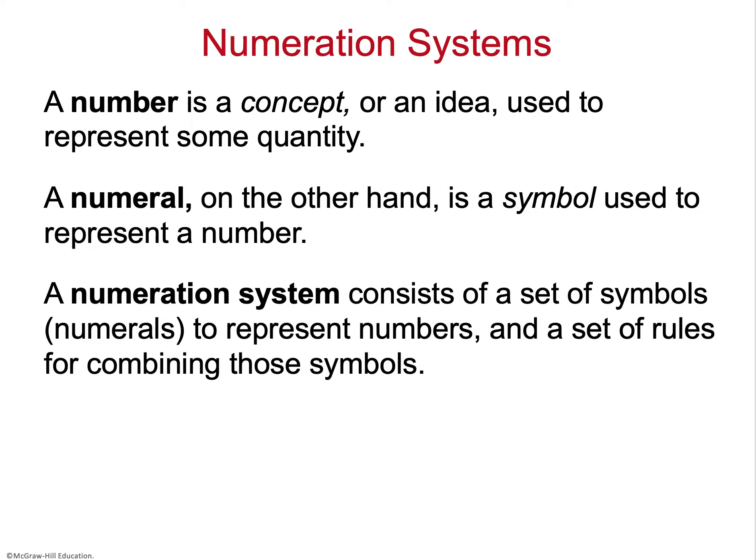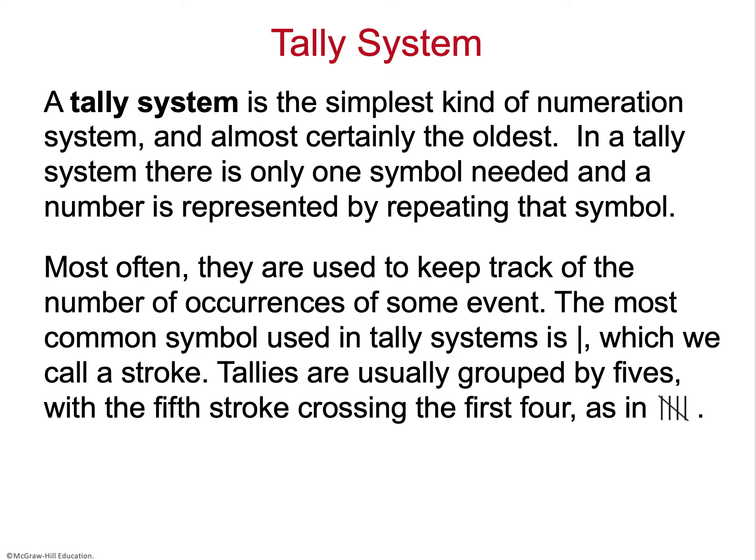It's overwhelming to think about a hundred numerals in a number system, so it should make sense that there has to be some type of pattern for combining symbols to reach higher numbers without memorizing an insane number of them. A tally system is the simplest and oldest kind of numeration system. In a tally system, there's only one symbol needed, and a number is represented by repeating that symbol.